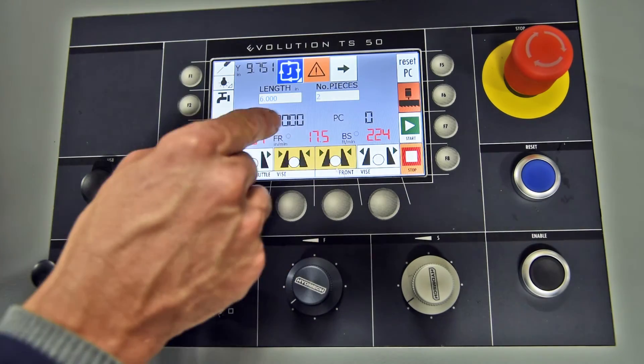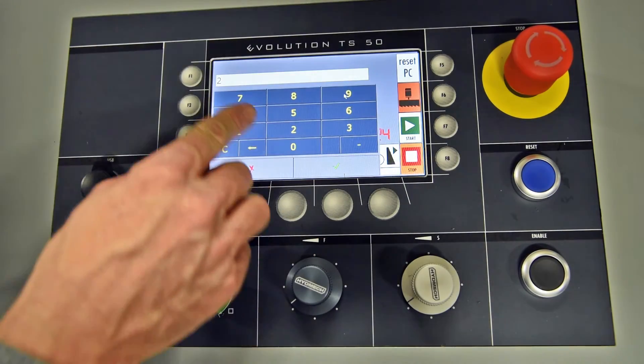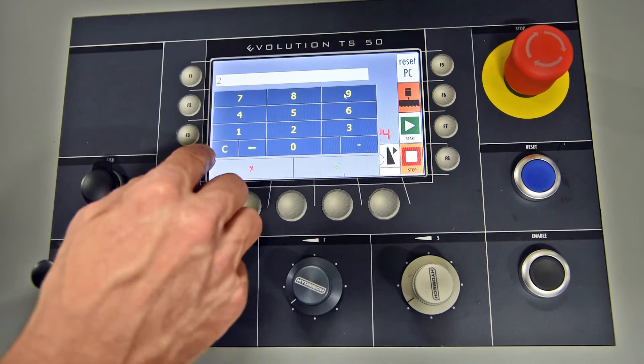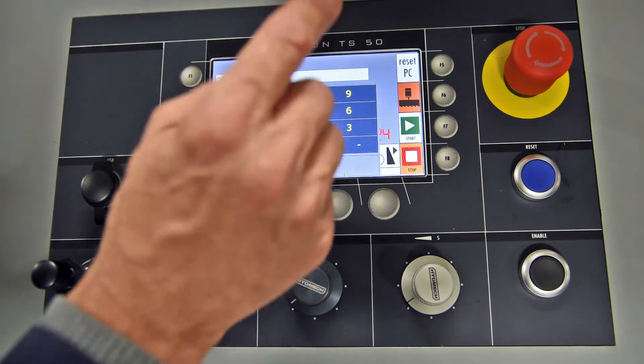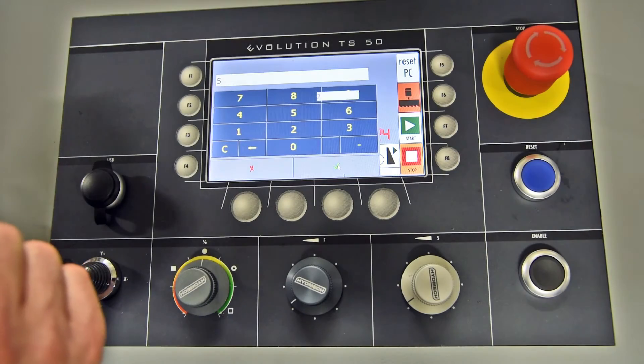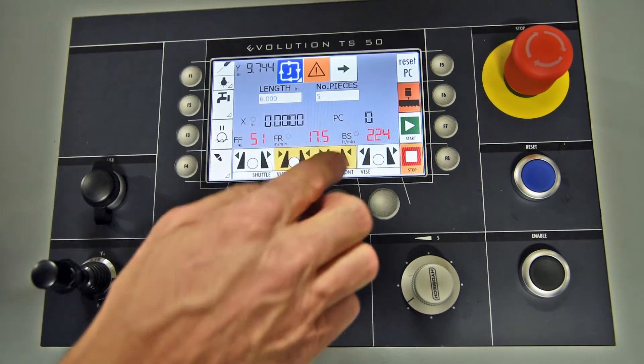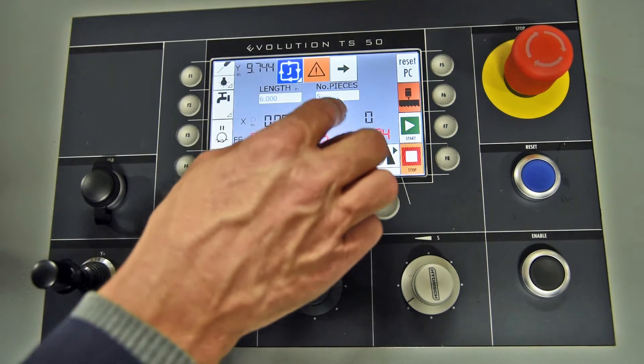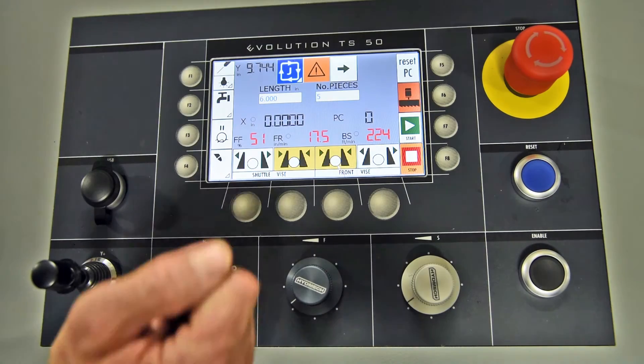Number of pieces I would like cut. At this point, I touch the display. Again, it's got two. So I can either clear it or I can just go five, enter. And at that point, I got six inches for length, five pieces, number of cuts I need.